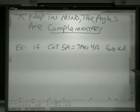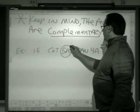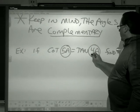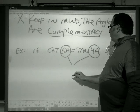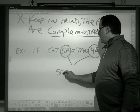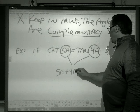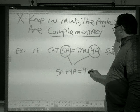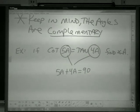So I know that 5a and 4a, they have to add up. So 5a plus 4a has to be 90. They are complementary.